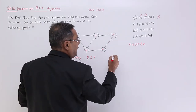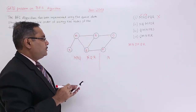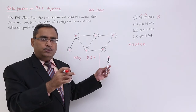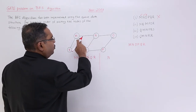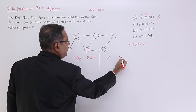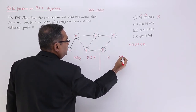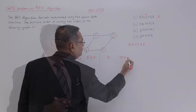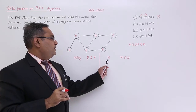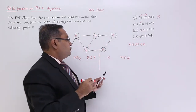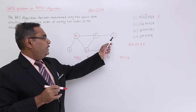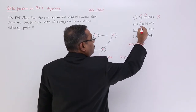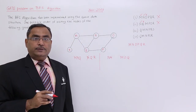Now let me go for the next option, which starts with N. N will be put in the queue and taken out. All adjacent nodes to N — which are M, O, and Q — will be inserted in alphabetical order: M, then O, then Q. M will come out first, but the option sequence does not show M next after N. It is not matching, so this sequence is also incorrect.